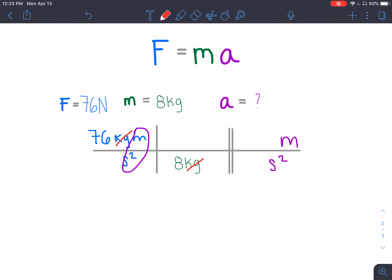Kilograms, kilograms, cancel out. So 76 divided by the mass or the force divided by the mass is equal to acceleration. So 76 divided by 8 is 9.5 meters per second squared.